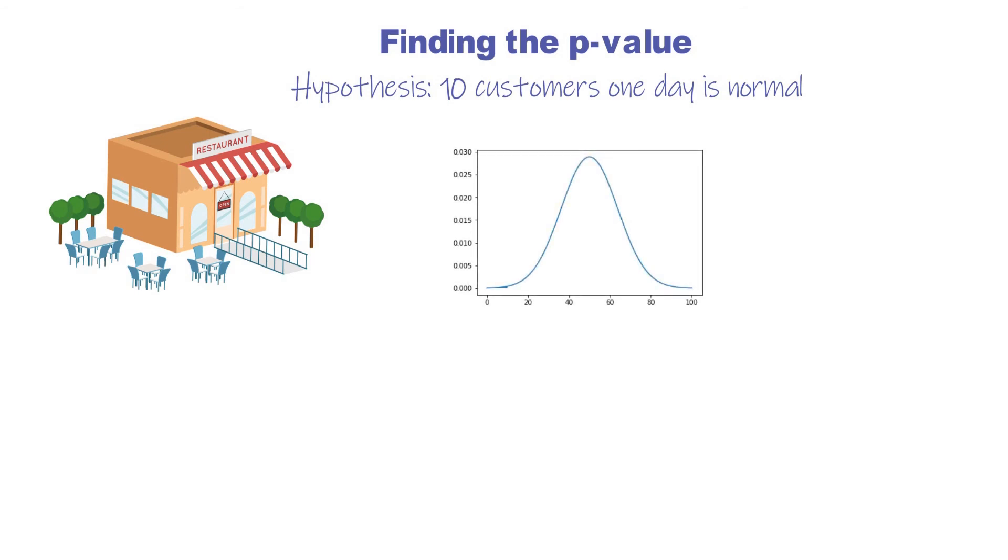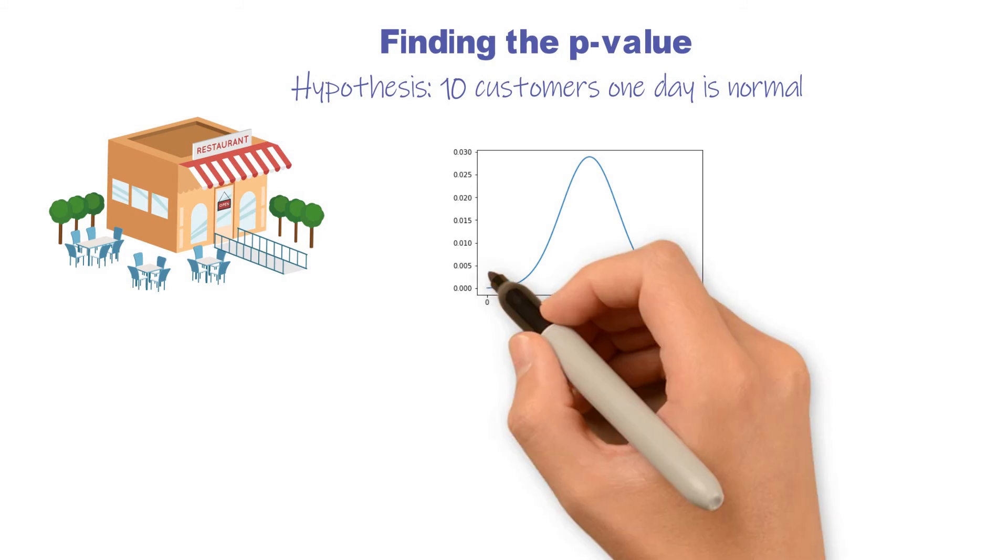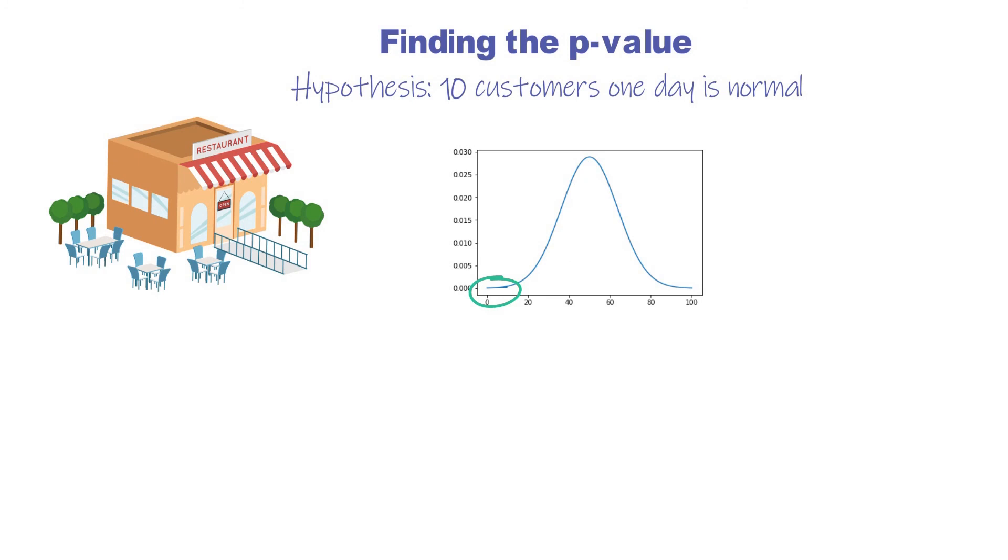The x-axis is the customer number, and the y-axis is the related probability. In this diagram, p-value is customer 10 or least. Let's say it's about 1%, less than 5%. So we reject the hypothesis, and say that this is not a normal day.